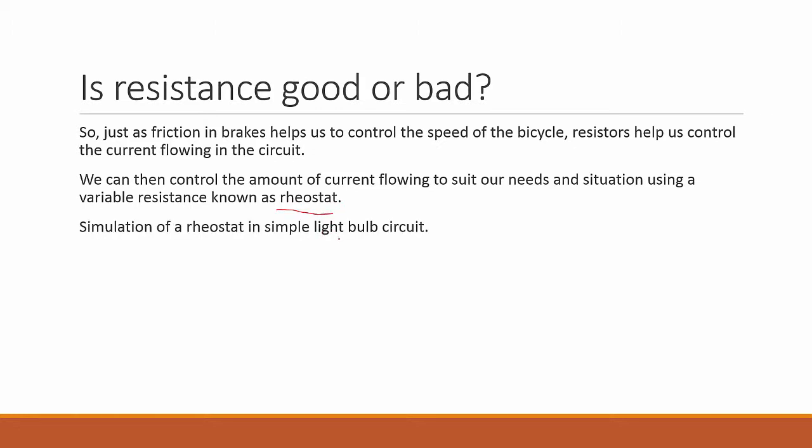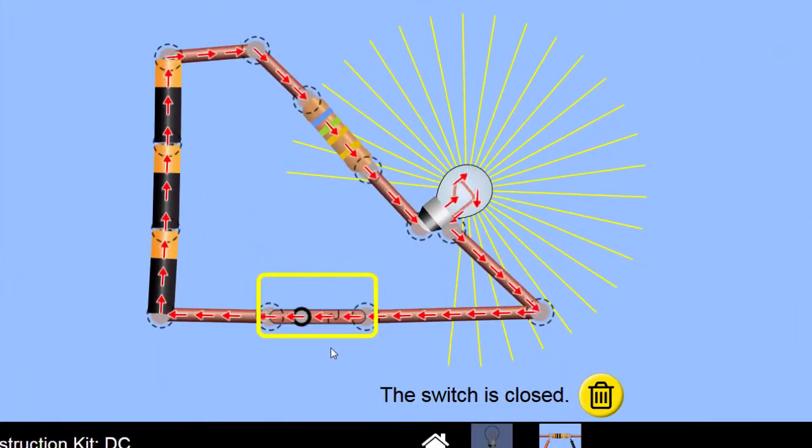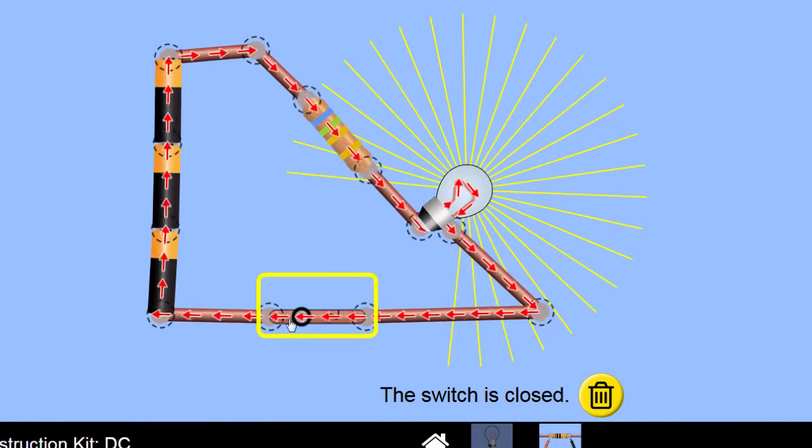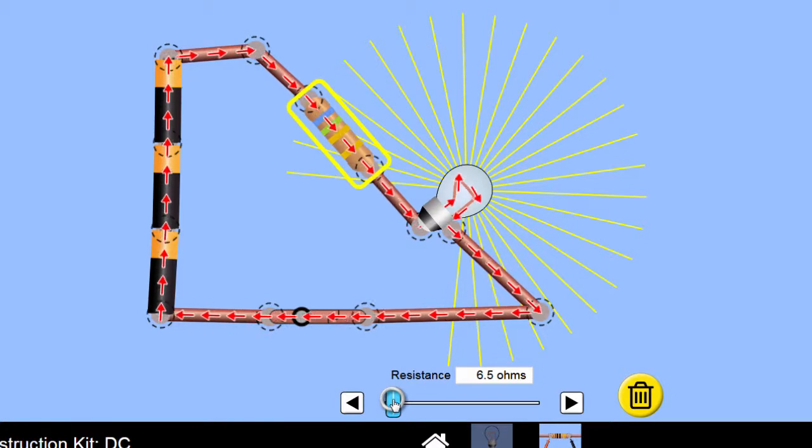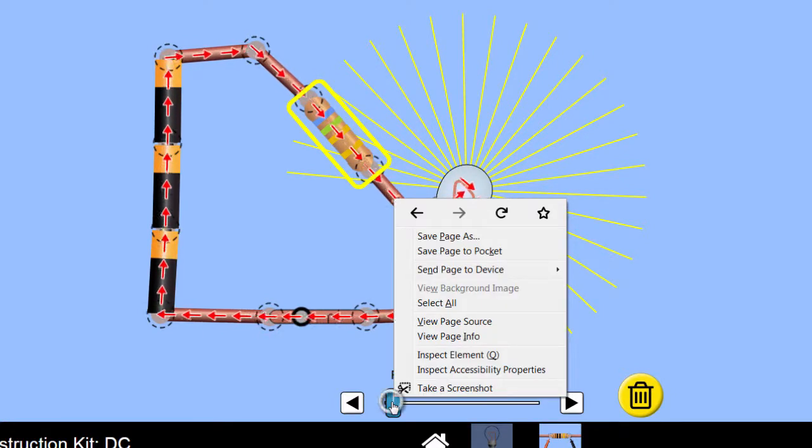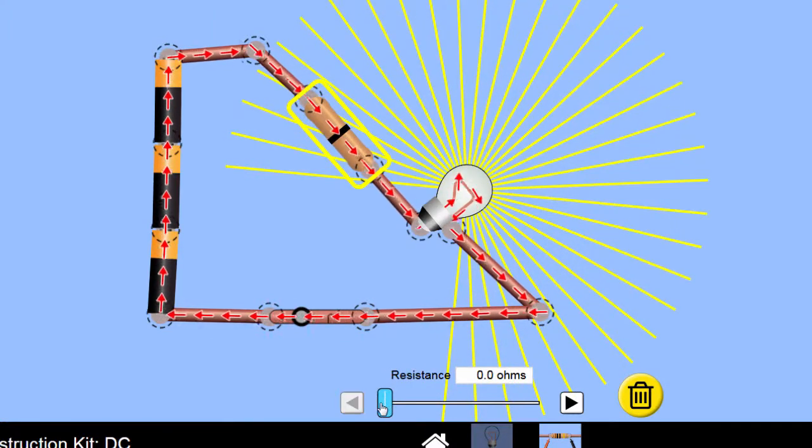Let's use a simulation of a rheostat. So in this circuit, we see that there's a battery and then there's this resistance and you have a certain light bulb with a certain brightness. We can control the amount of resistance. If we feel that the room is too dark, we can lower down the resistance of the light bulb and make it brighter.